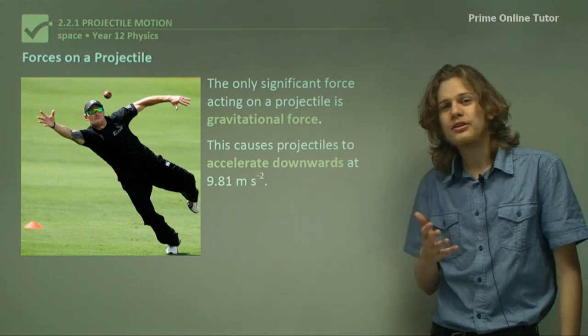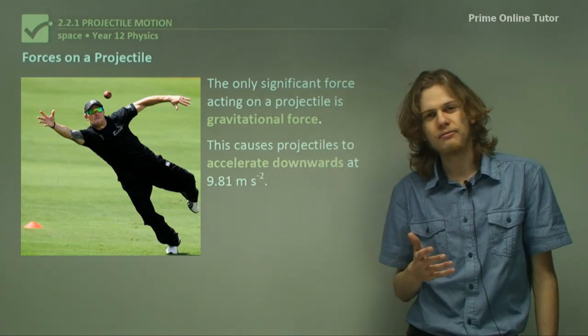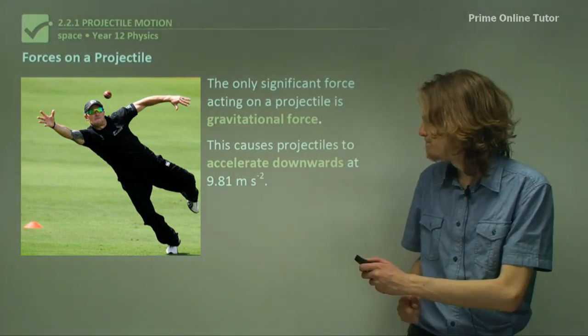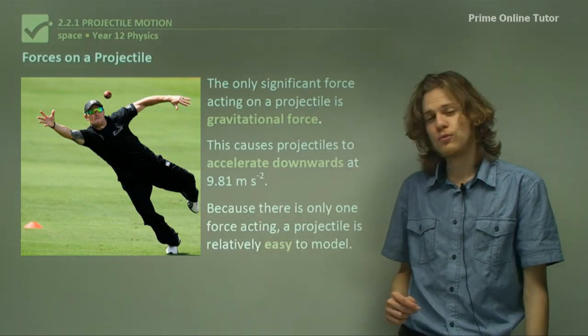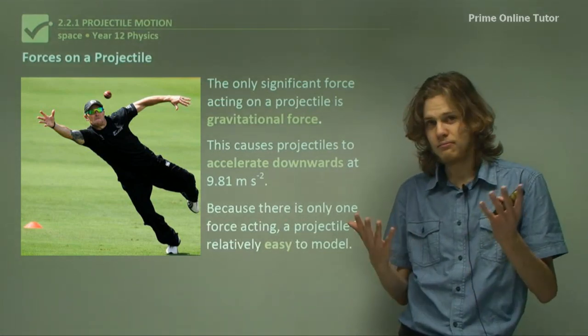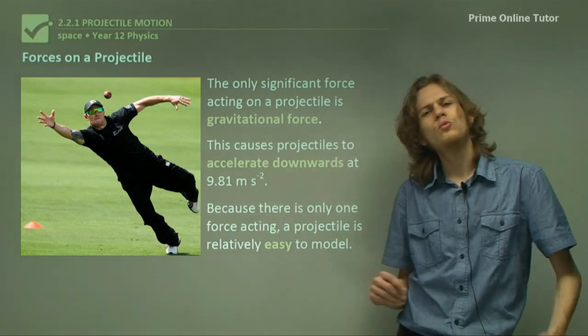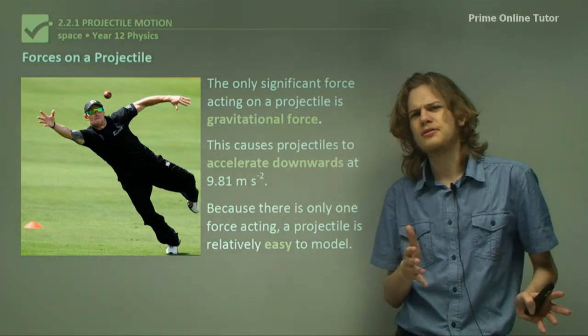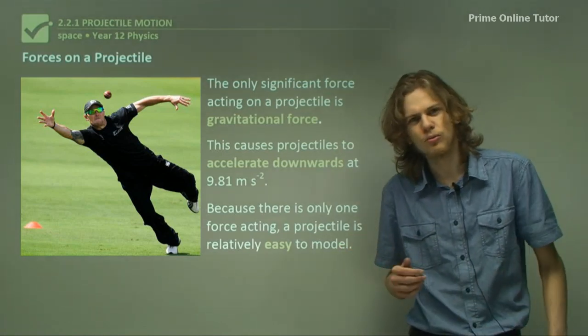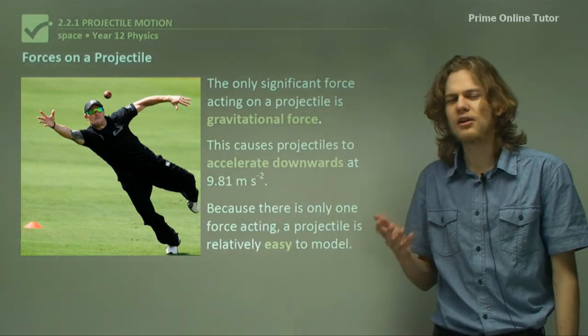Projectiles near the Earth will accelerate downwards at 9.8 meters per second squared. Because there is only one force acting, gravity, a projectile is relatively easy to model. We don't have to worry about forces like air resistance, or thrust, or drag, or anything like that.